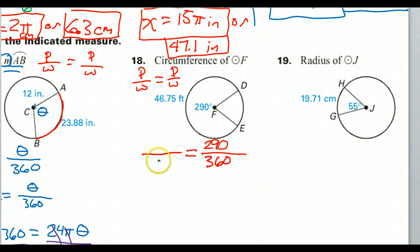Now, let's see what we have on this side. On this side is where we do length. So we're going to have partial length and then the total length, or the circumference. We have the partial length, the arc length, right here. It is 46.75. So the only thing that we're missing is the whole length, which is also known as the circumference.